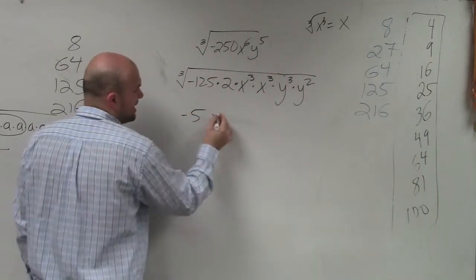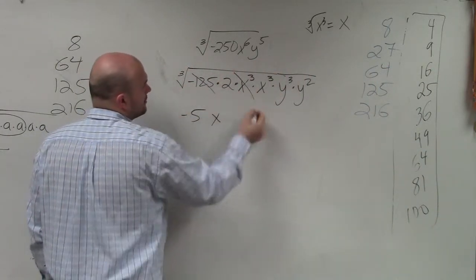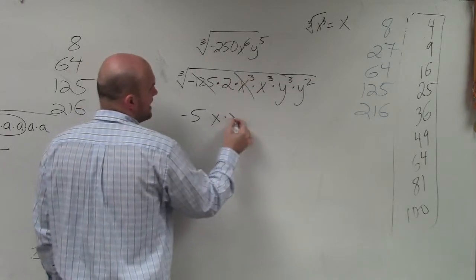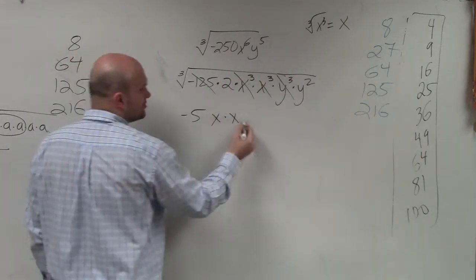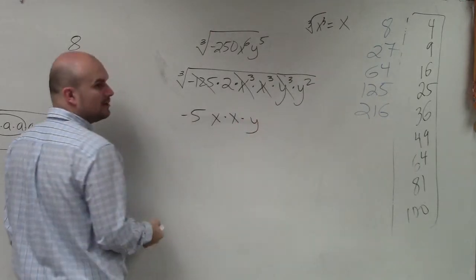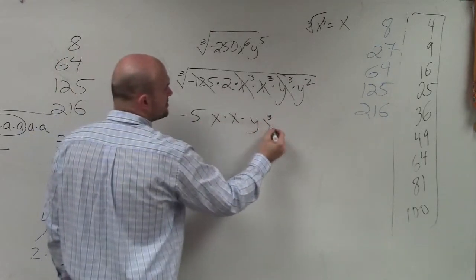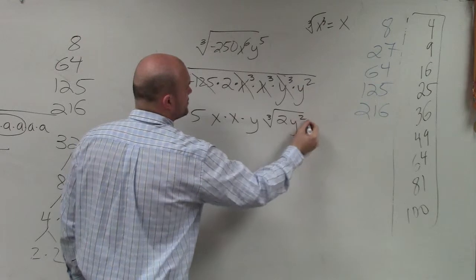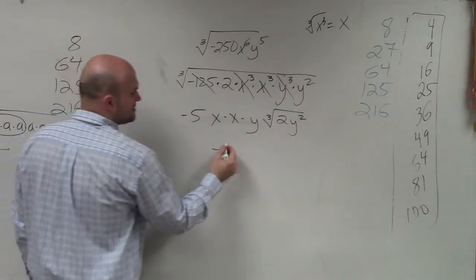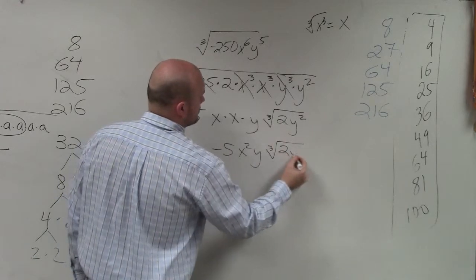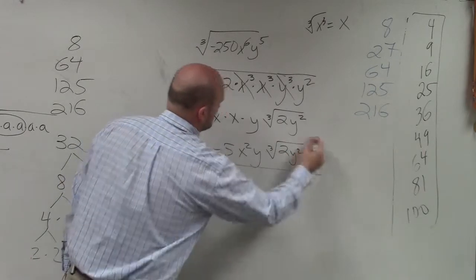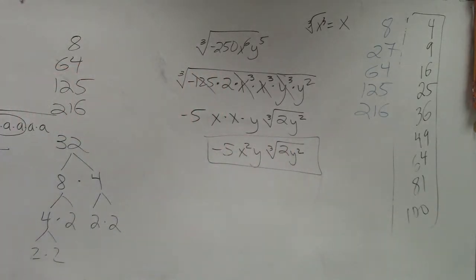And then, cube root of x cubed times x cubed is x squared. So, there's your x squared. Cube root of y cubed is y. And then, what do we have left over? The cube root of 2y squared. Then, we just simplify this. That's it.